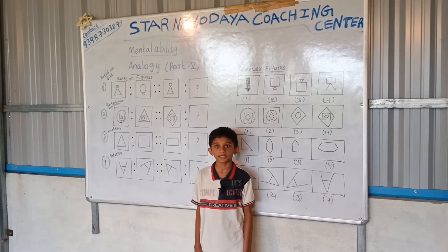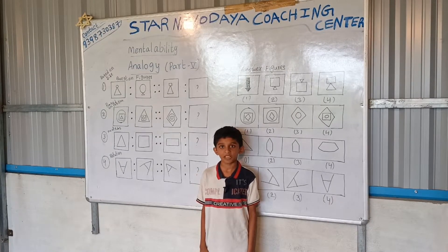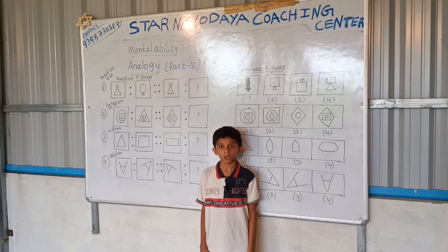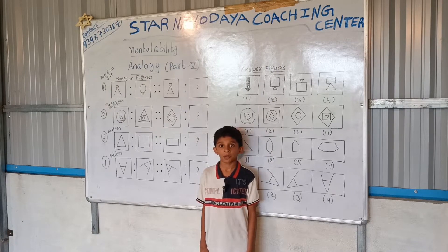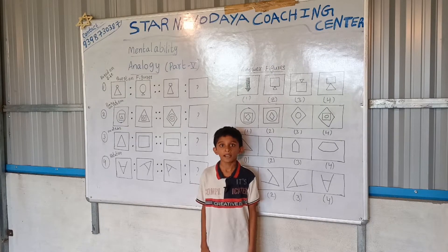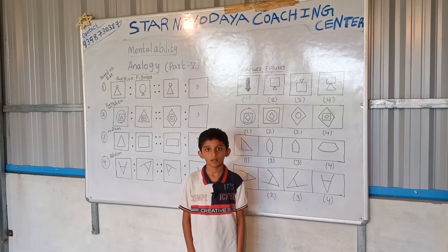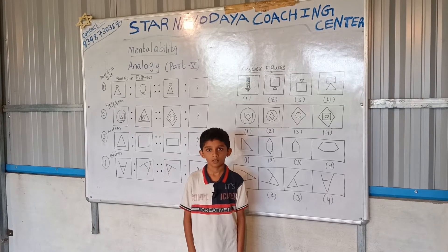Natural Numbers. The numbers which start from 1 to infinity. It is denoted by N. Example: 1, 2, 3, 4, 5, 6, 7, and so on.